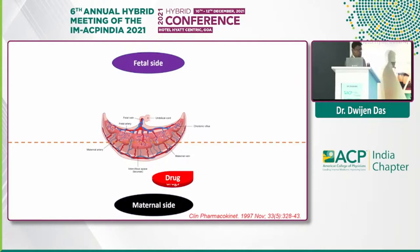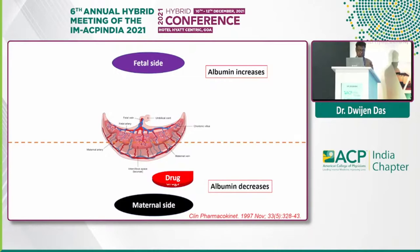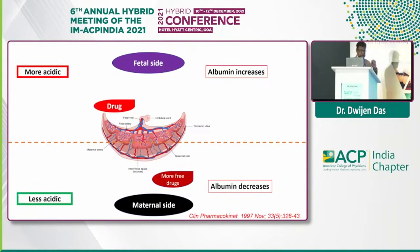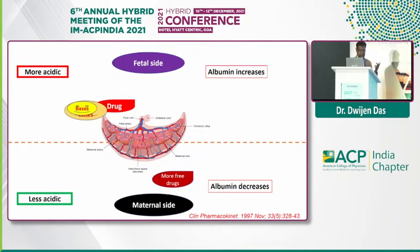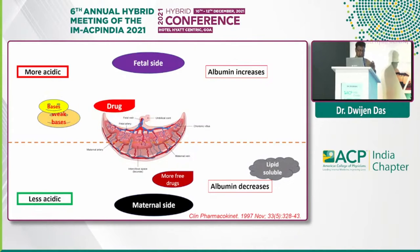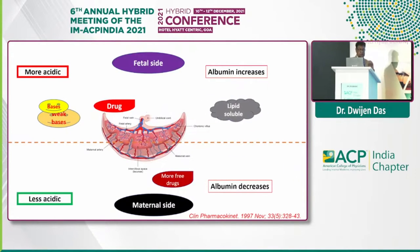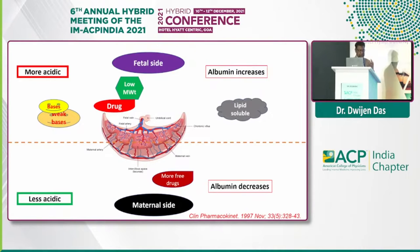There are two zones — one from the fetal side and another from the mother's side. In pregnancy there is actually low albumin in the mother's environment, and that's why there is more chance of development of free drugs in the mother, which can transmit through the placenta to the fetus and cause damage. The mother has less acidic media and the fetus has relatively more acidic media, so if we use some weak base as a drug, it may transmit through the placenta and cause metabolic changes in the fetus. Similarly, lipid soluble drugs and low molecular weight drugs can easily pass through the placenta and cause fetotoxicity.